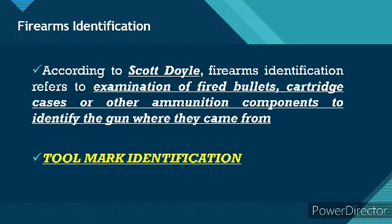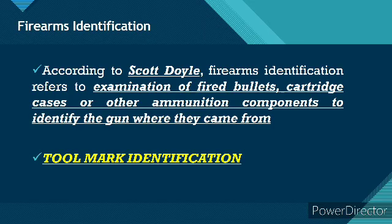We have three areas in firearms identification: bullet identification, cartridge case identification, and firearm identification per se. For bullet identification, what we look for are the land and groove marks. For cartridge case identification, what we look for are the firing pin mark as well as the breech face mark, along with other marks like the ejector mark and extractor mark.